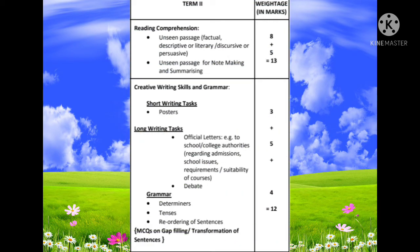For term 2, again there will be 3 sections. Section A is reading comprehension: an unseen passage — factual, descriptive, literary, discursive, or persuasive — carrying 8 marks. Then another unseen passage for note making and summarizing, carrying 5 marks. The total weightage of marks for term 2 reading comprehension is 13.